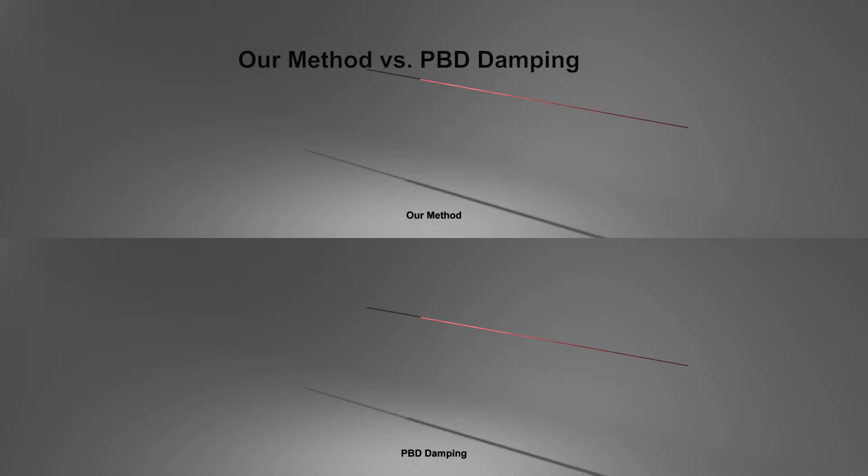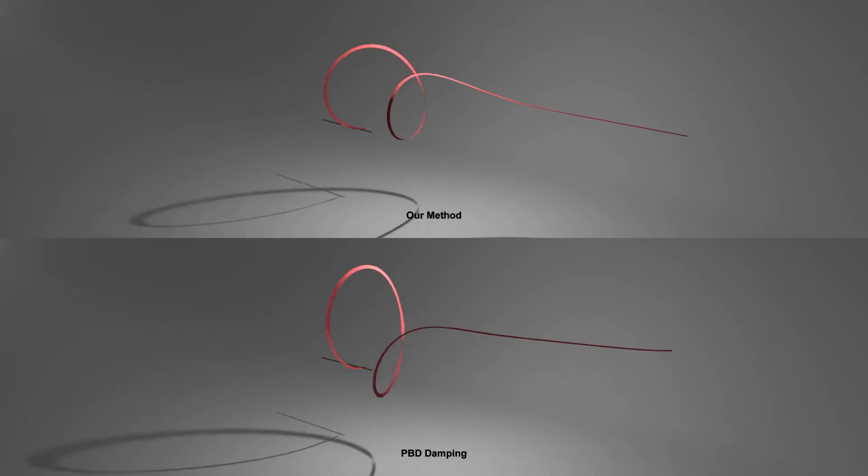The PPD damping conserves angular momentum, but not always in a physically realistic way. In this example, the tail of the ribbon starts rotating immediately, similarly to a rigid body. Our method makes the ribbon look more like fabric.